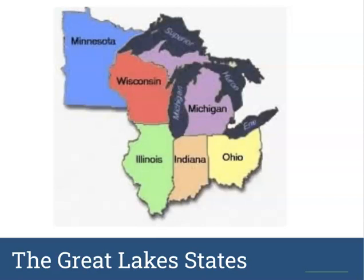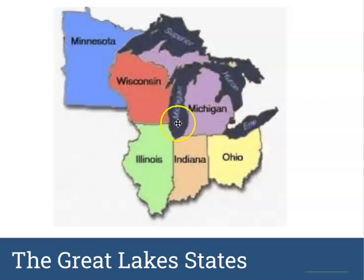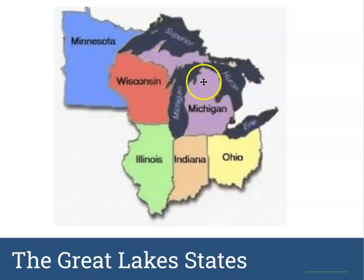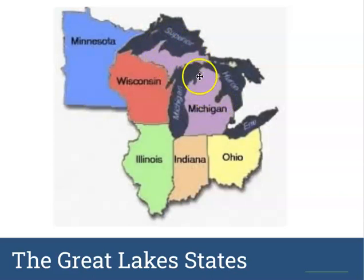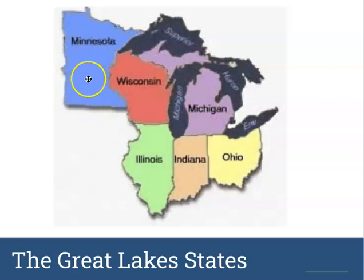Now onto the Great Lakes states — those that touch the Great Lakes. Ohio touches Lake Erie. Michigan touches Lake Huron and Lake Michigan. Indiana, Illinois, and Wisconsin touch Lake Michigan. Wisconsin also touches Lake Superior. Michigan also touches Superior through its Upper Peninsula — Michigan is split into two parts: the main part shaped like a mitten, and the Upper Peninsula. Minnesota touches Lake Superior as well.